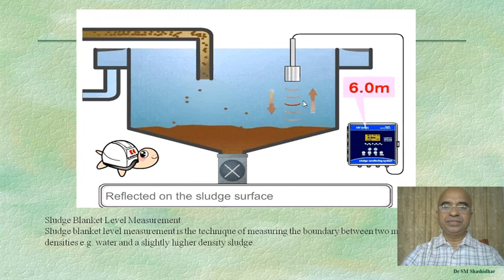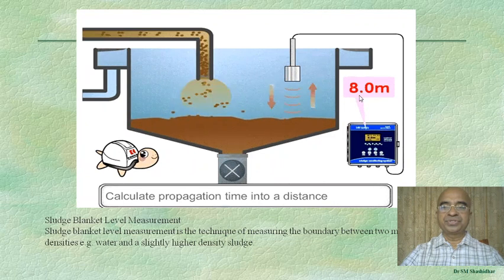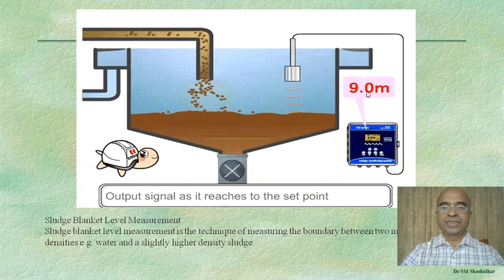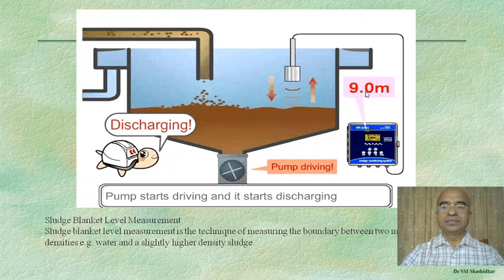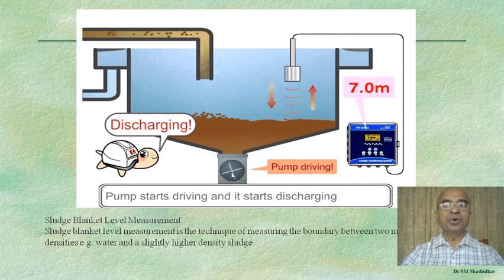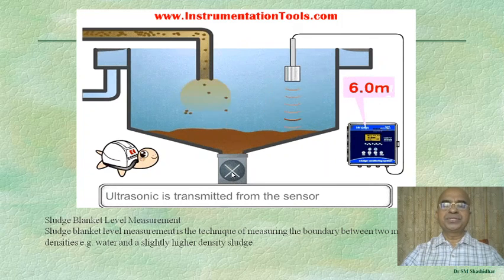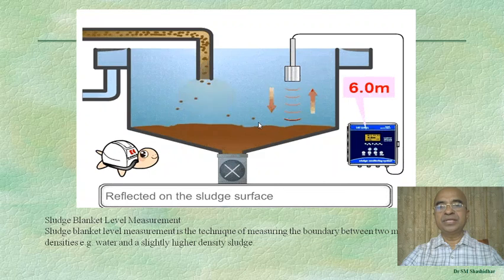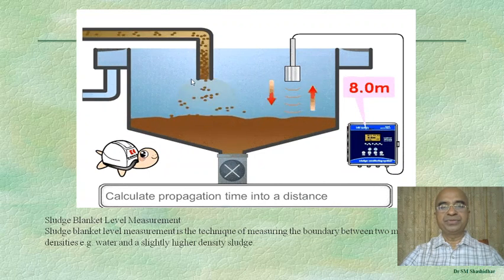Whenever the sludge level reaches 9 meters, a pump is immediately activated and the sludge flows away. A valve opens and closes based on the sludge level in the tank.